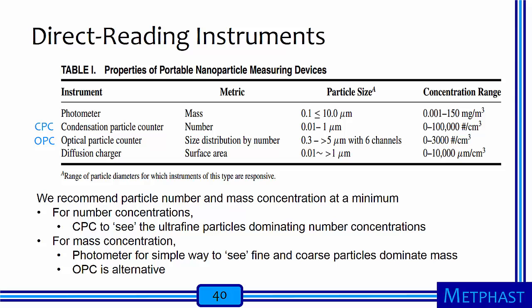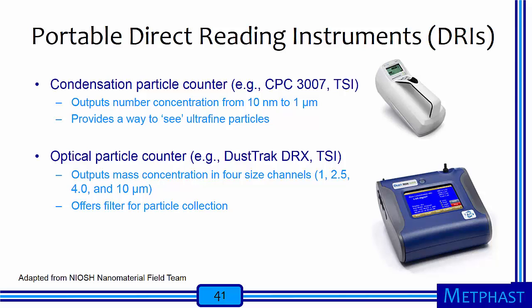Alternatively, an optical particle counter can be used to assess number concentration by size of particles larger than 300 nanometers. If used, make sure the optical particle counter you select provides output in mass concentrations as well as raw number concentrations. This slide shows specific direct reading instruments used by the NIOSH nanomaterial field team, including a condensation particle counter to measure sub-micrometer particle number concentrations, and an optical particle counter that can measure larger particles — in this case mass concentration in four size ranges: 1 micrometer, 2.5 micrometer, 4.0 micrometers, and 10 micrometers. This device also offers an after filter so that the optical information can be back-corrected to a real measure of particle mass concentration.